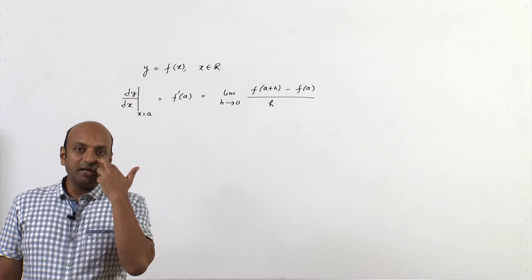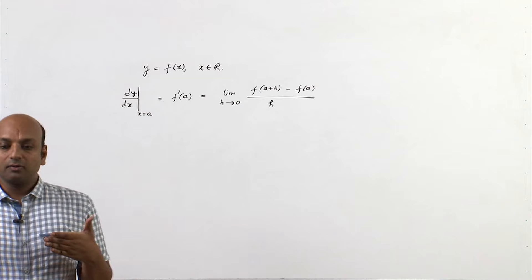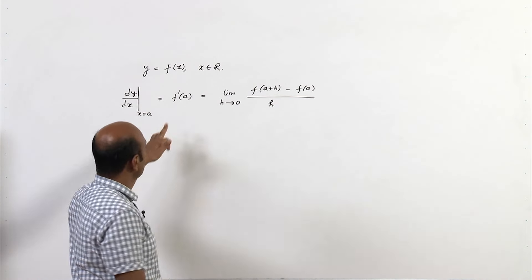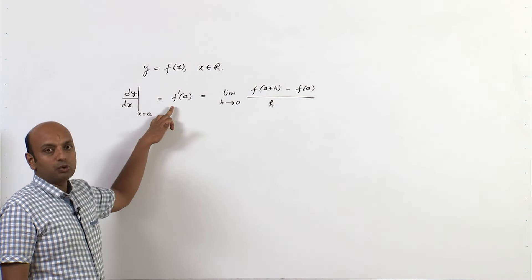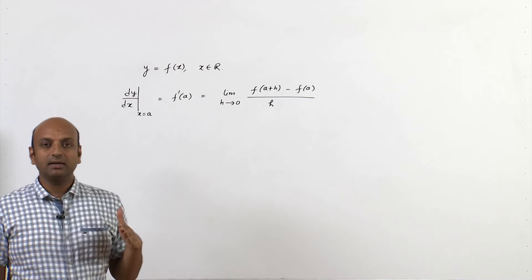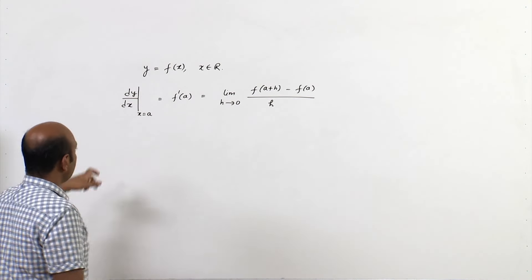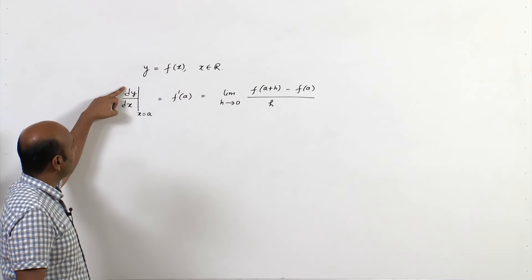What does the derivative give us? It simply gives the slope of the tangent at a point x = a on the curve y = f(x). It also represents the rate of change of f along the x-axis — the rate at which the function changes along the x-axis.